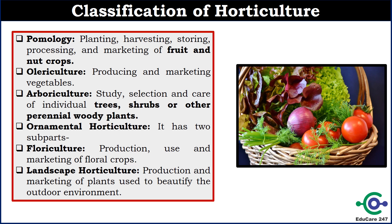Let's see the classification of horticulture. The first classification is Pomology — planting, harvesting, storing, processing and marketing of fruit and nut crops. The next is Olericulture — producing and marketing vegetables. Then Arboriculture — related to woody plants, it is the study, selection and care of individual trees. Ornamental Horticulture has two sub-parts: Floriculture, which is production, use and marketing of floral crops; and Landscape Horticulture, which is production and marketing of plants used to beautify the outdoor environment. You can remember all these classifications, as they can be asked in your Nabard Grade A examination.